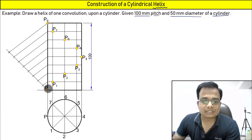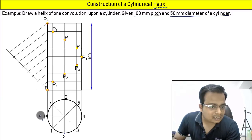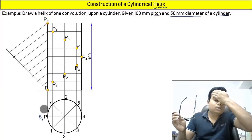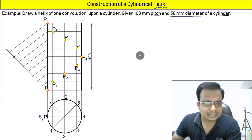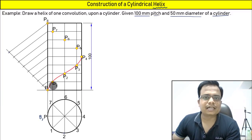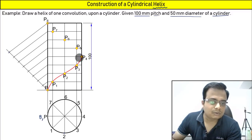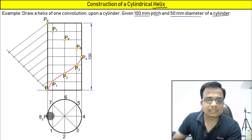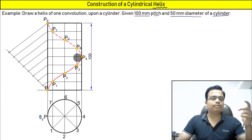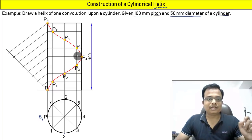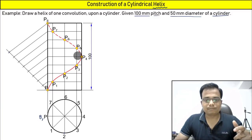One revolution is now complete — P8. It has completed one convolution and traced this curve. This portion from zero to four is visible to us in front, and the portion behind from four to eight is not visible — that is why we use a hidden dotted line, or a broken curve. So this is exactly how a helix is prepared for a point moving around a cylinder with uniform axial displacement.